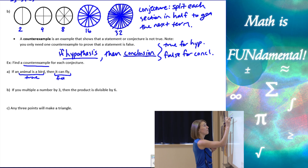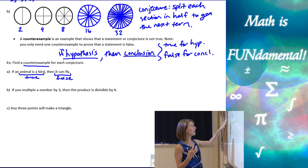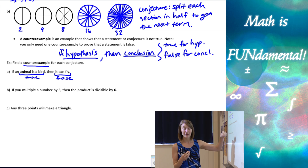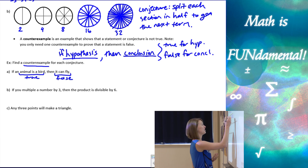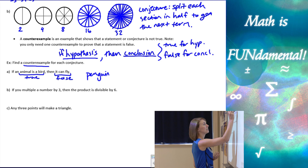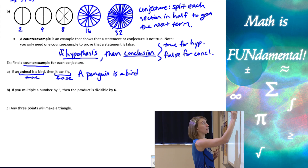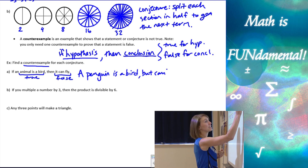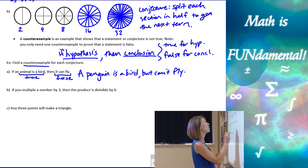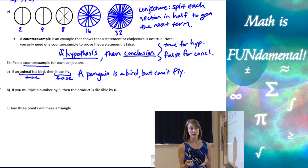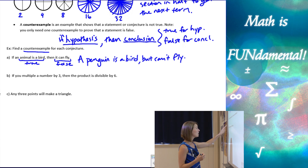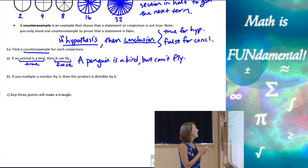A penguin is a bird — so it's true for the first part — but it can't fly, so it's false for the second part. That makes a penguin our counter example here.